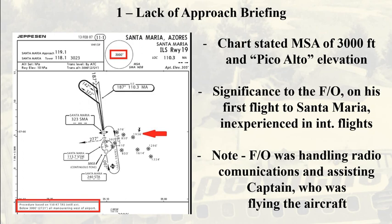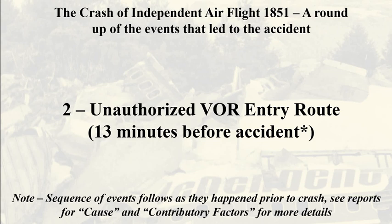Among various information, the approach plates stated the MSA — the Minimum Sector Altitude for Santa Maria. The MSA denotes an altitude below which it is unsafe to fly, owing to the presence of terrain or obstacles. In the case of Santa Maria, the minimum sector altitude was 3,000 feet, and the chart also denoted the elevation of Pico Alto near 2,000 feet, both of which can be seen outlined in red on the chart. This information was of particular significance to the first officer of Flight 1851, who was on his first flight to Santa Maria and was inexperienced in international routes. It should be noted that the first officer was handling radio communications and assisting the captain, who was flying the aircraft.